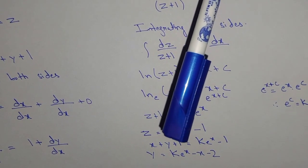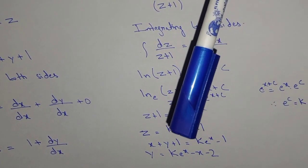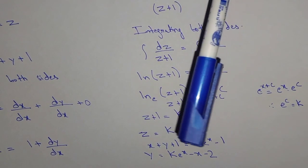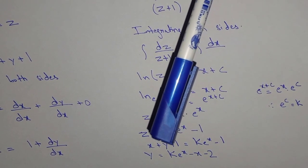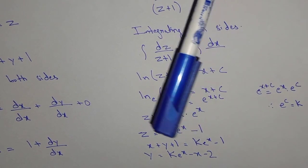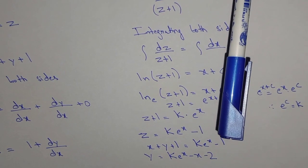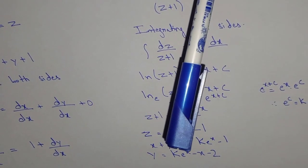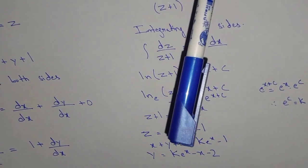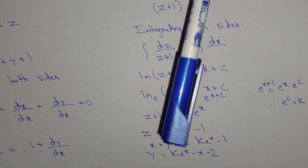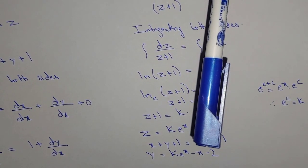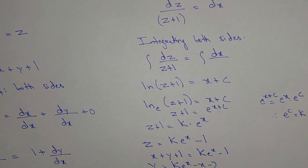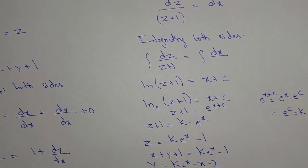So the value of y will be y equal to k·e^x minus x — it comes to the right hand side so the sign changes — minus 1 minus 1 gives minus 2. Therefore y equal to k·e^x minus x minus 2. I hope you understand, thank you for watching.